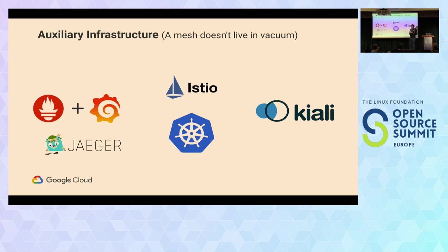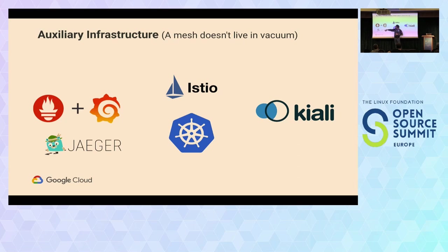The last challenge is auxiliary infrastructure. You run on Kubernetes, but now you need to visualize your service mesh. Istio has a tool called Kiali — a GUI that lets you visualize the service mesh and see which services talk to each other. That's a workload you have to run, spending CPU and memory, and maintaining and patching it. You have Jaeger for tracing, Prometheus and Grafana for monitoring — all extra pieces of software you have to install, maintain, and pay for. All these extra pieces of infrastructure to take advantage of what the service mesh gives you is something you have to keep in mind.